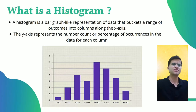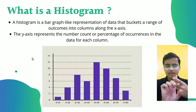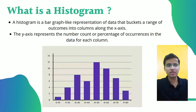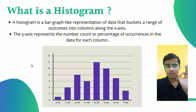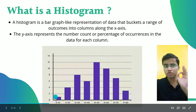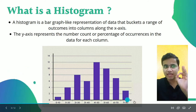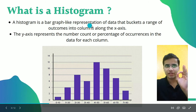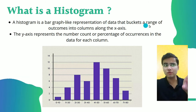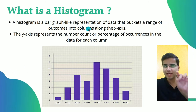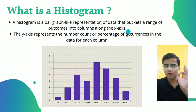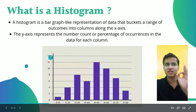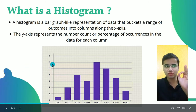What is a histogram? A histogram is a bar graph-like representation of data that buckets a range of outcomes into columns along the x-axis. The range of outputs is the x-axis and the frequencies — the count — are the y-axis.